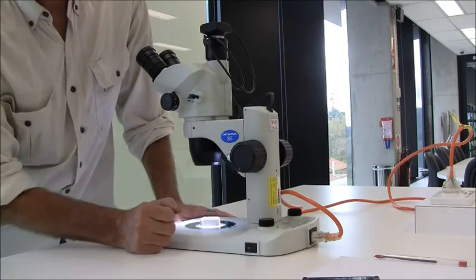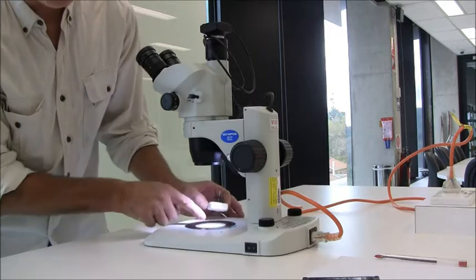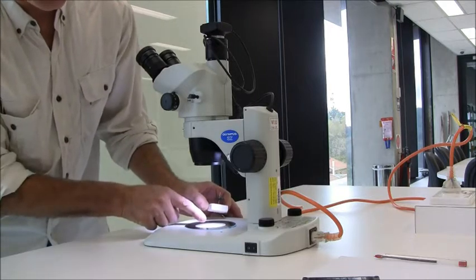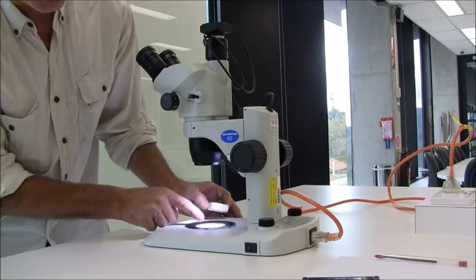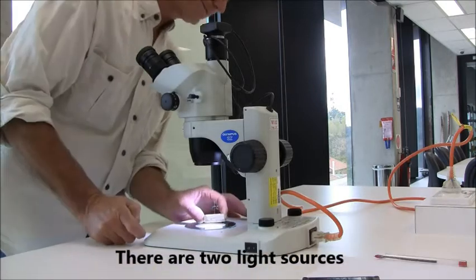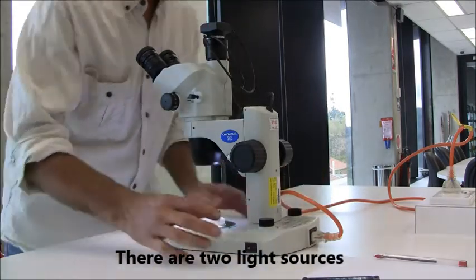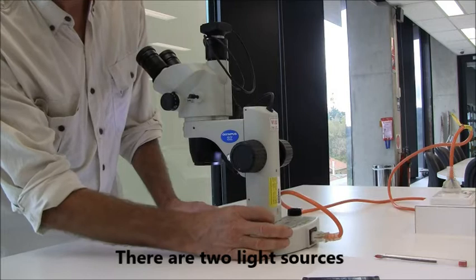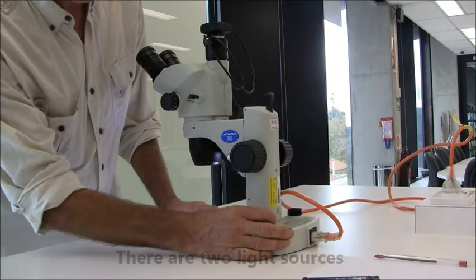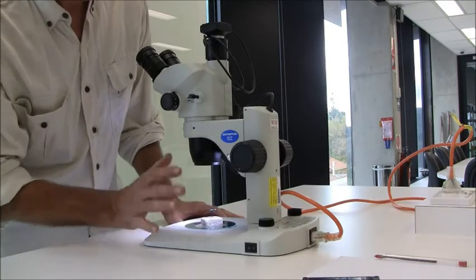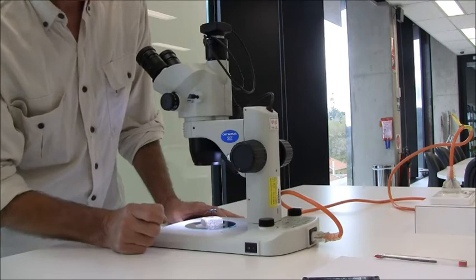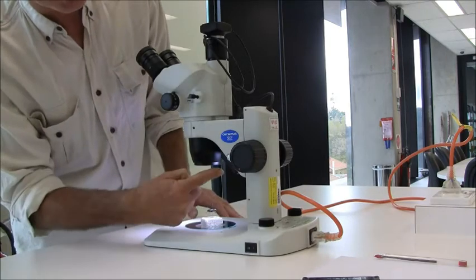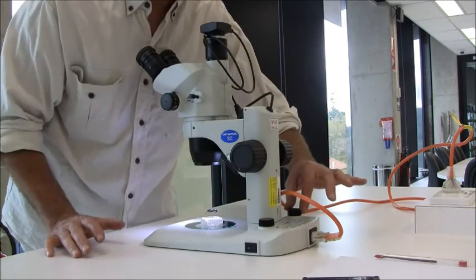But you can direct the light from two different paths from below the specimen. And that is the light intensity dial on the right. And so you can work with fairly thin and small specimens. Or you can direct the light from the top, and that's the dial on the left.